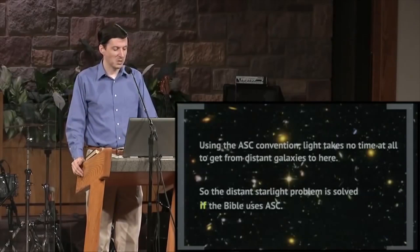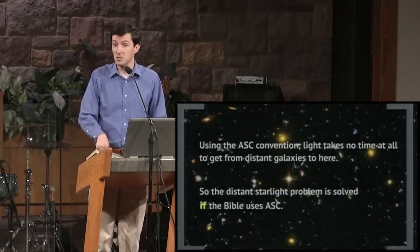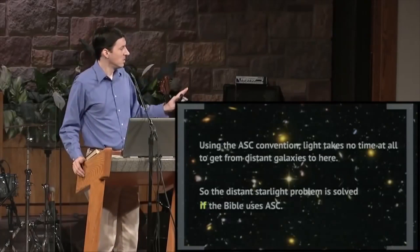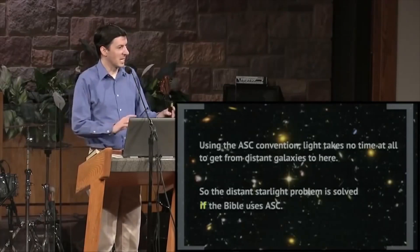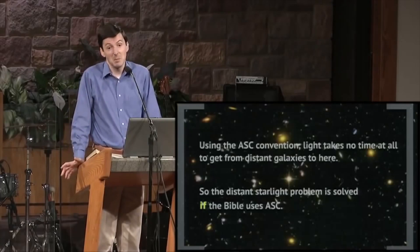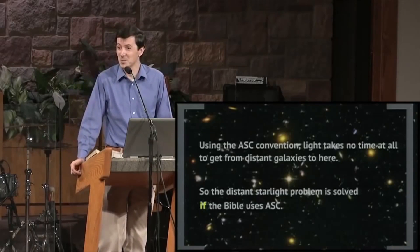And the distant starlight problem therefore is solved, if the Bible's using that convention too. And so that's really the only issue. Is the Bible using this alternate, this anisotropic synchrony convention, or is it using Einstein convention, or is it using something else? It's using some convention, because it's talking about time, so there's some convention there. And there it is.